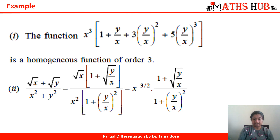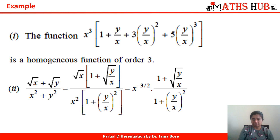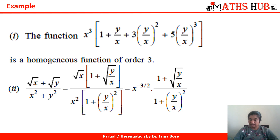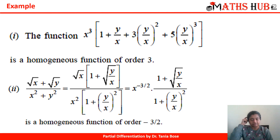Let's try (√x + √y) / (x² + y²). Take out √x common from the numerator, giving √x · (1 + √(y/x)), and take out x² from the denominator, leaving 1 + (y/x)². Collecting the powers of x gives x^(−3/2), and the leftover function is already a function of y/x. Hence this is a homogeneous function of order −3/2.